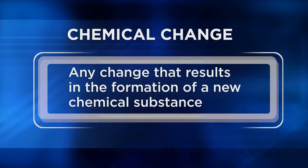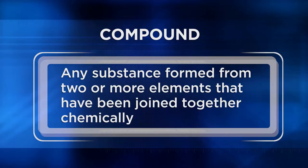A chemical change is any change that results in the formation of a new chemical substance. When two or more elements combine, they form what's known as a compound. A compound is any substance formed from two or more elements that have been joined together chemically. Remember that compounds don't change their identity through physical changes, but can be separated by chemical changes. In order to see a chemical change, you have to initiate a chemical reaction. Let's get back to our classroom with a new group of students to learn more about compounds.